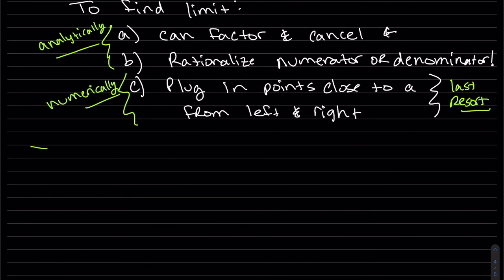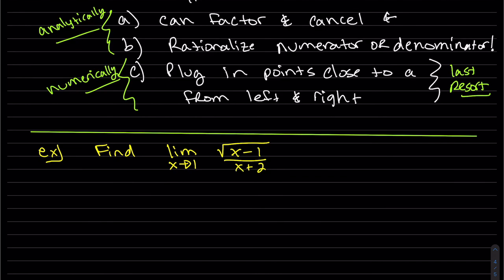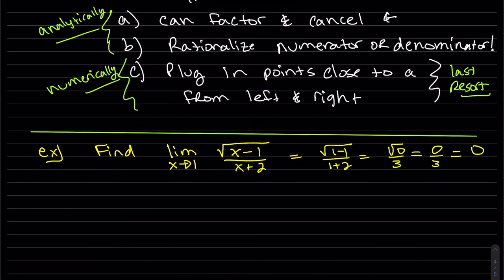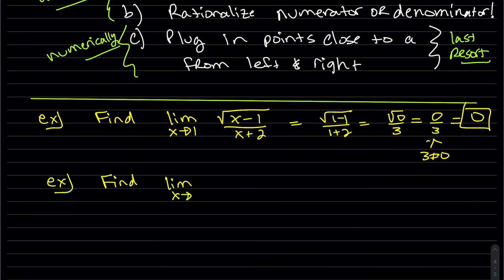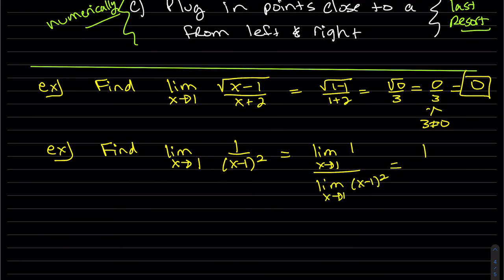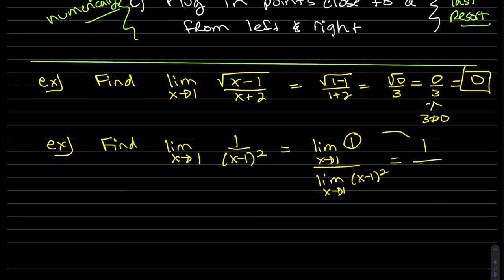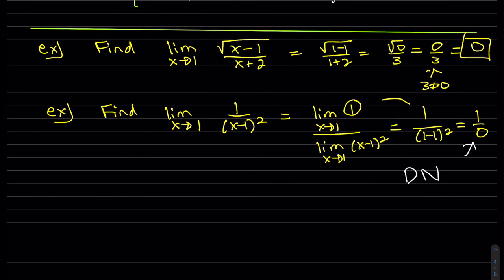Now let's do some examples. The first thing we want to do is plug in that value. As x goes to 1, we plug in x equals 1 to see what's going on. This is our first case where the denominator is not 0, so our answer is 0 over 3, which is 0. For the next example, we plug in 1 and we do get 1 over 0 — this is automatically DNE, does not exist.